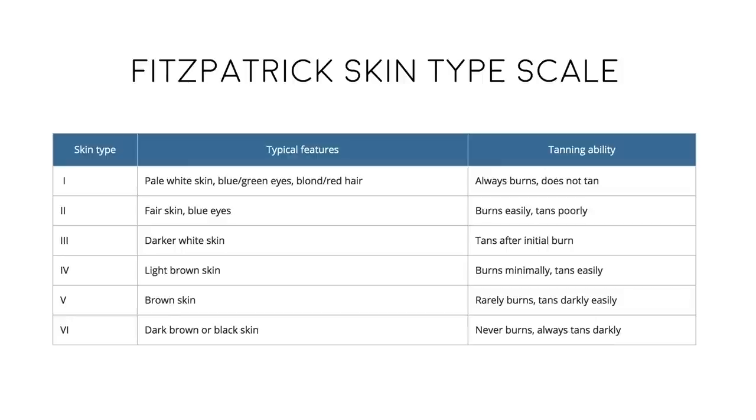To understand sunscreens, we first need to understand how our skin reacts to ultraviolet light. We use something called the Fitzpatrick skin type scale, which should pop up now — have a look, maybe pause the video and determine which skin type you are. I would classify myself as a type 3.